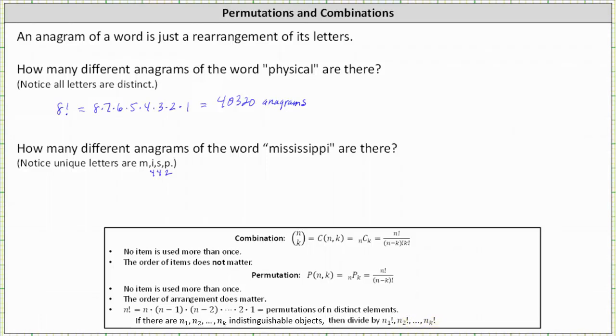And therefore, the number of anagrams of the word Mississippi is 11 factorial divided by, because there are four i's, four s's, and two p's, we divide by four factorial, four factorial, and two factorial.